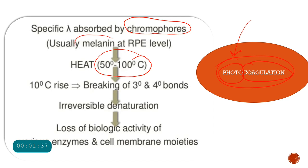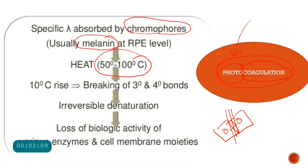These pigments include melanin and xanthophyll, each absorbing specific wavelengths. Melanin in the RPE — the retinal pigmented epithelium — absorbs this laser light, generating significant heat. The rising temperature causes the strong bonds between cells to break. The proteins, cytoplasm, and cellular contents become denatured and coagulated, and biological activity is lost. This is the principle of photocoagulation.